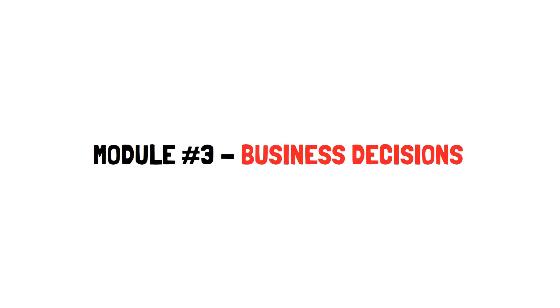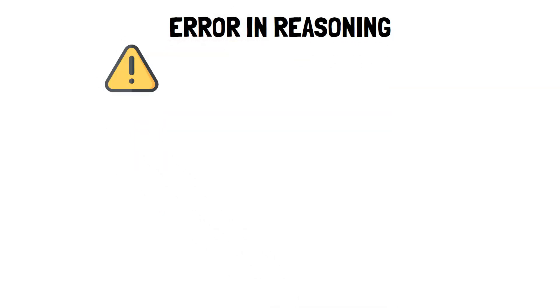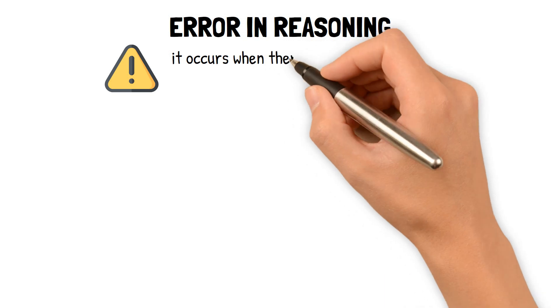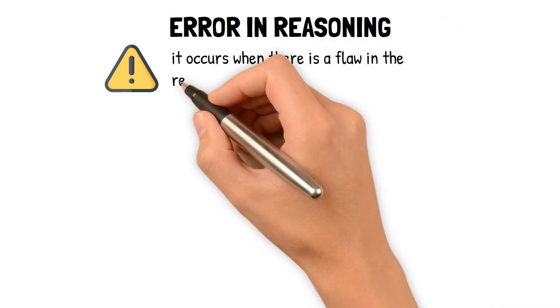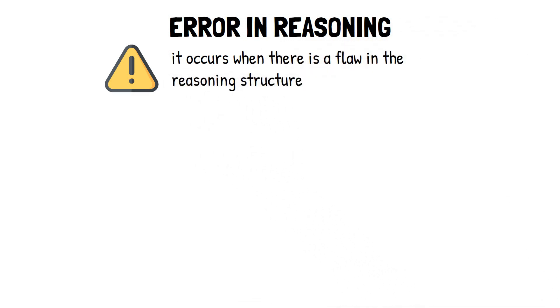Module 3, Business Decisions. Error in Reasoning. Error in reasoning refers to a mistake made in logical thinking or argumentation, and it occurs when there is a flaw in the reasoning structure or a lack of evidence to support a claim.